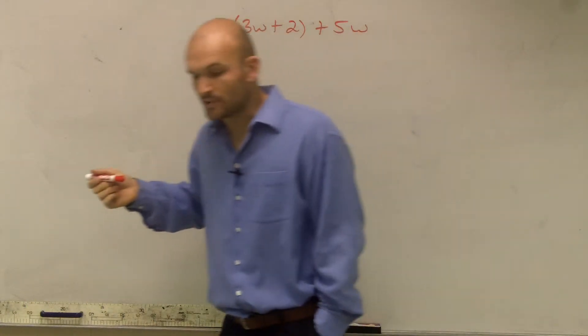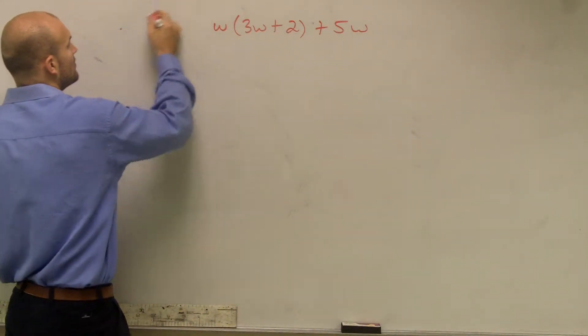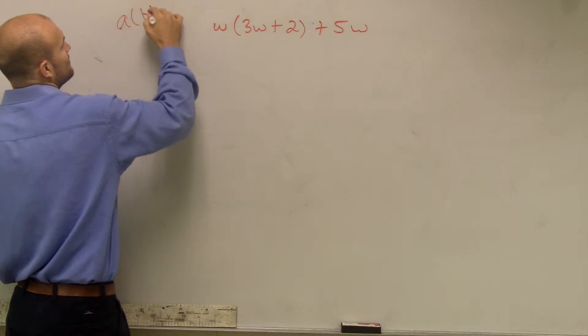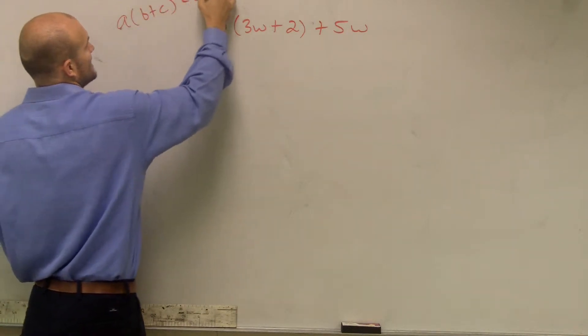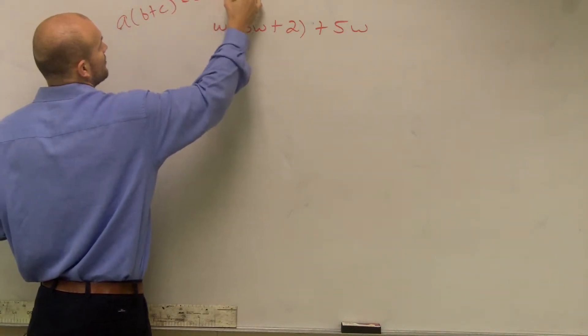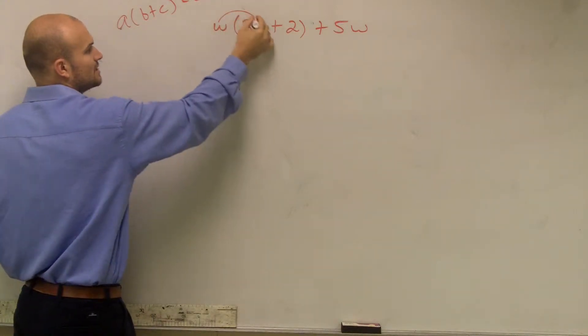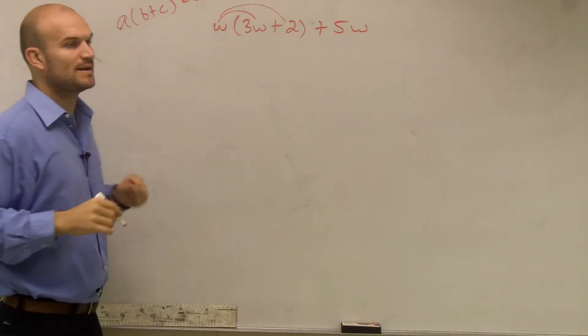So what I'll do then, Brittany, is if I use my distributive property, I remember that a times b plus c equals a times b plus a times c. So I'm simply just going to multiply my w times both my terms.